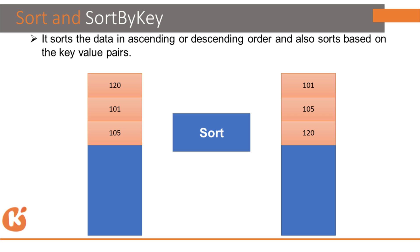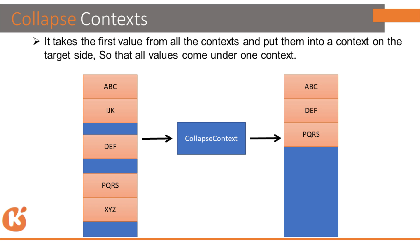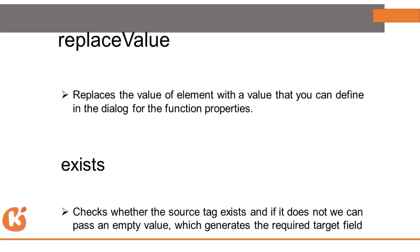Collapse Context is similar to Remove Context, but if two or three fields are in the same context, it will only give the top value. For example, ABC and IJK are in the same context, but after Collapse Context only ABC is given because it is on top. Similarly, PQRS and XYZ are in the same context, but only PQRS is returned.